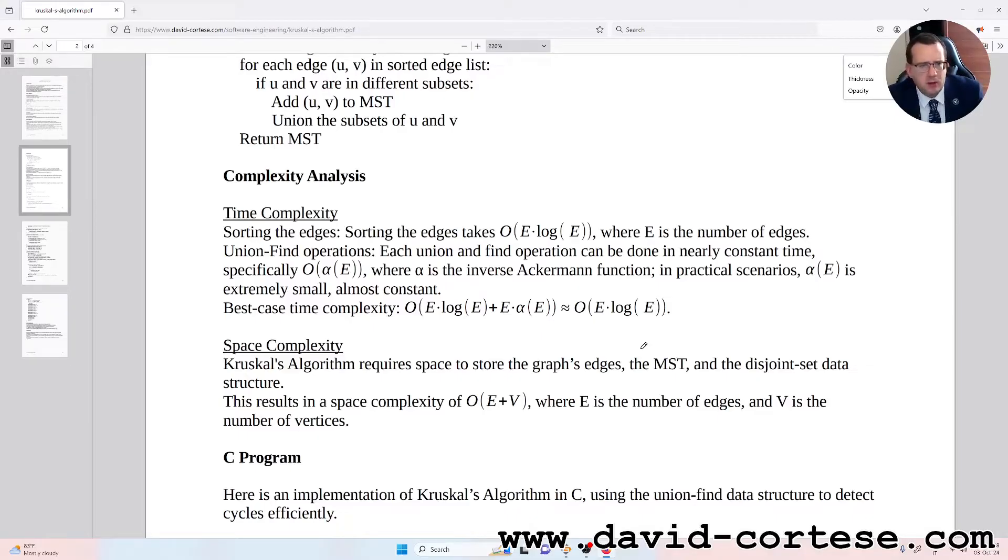Best case time complexity: O of E times log E plus E times alpha of E, that is approximately O of E times log E.